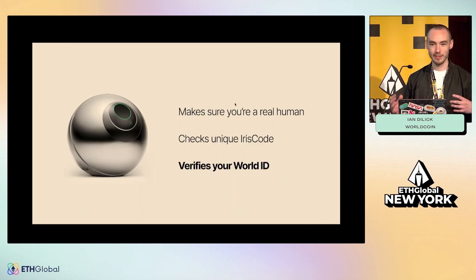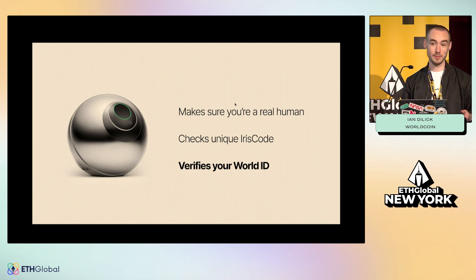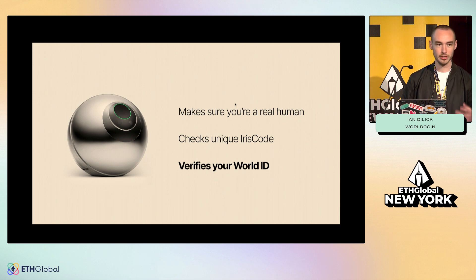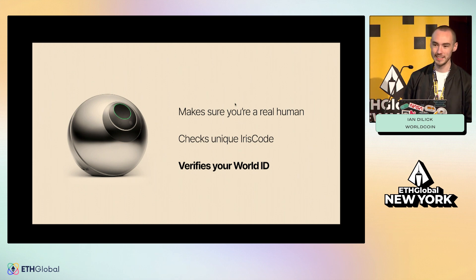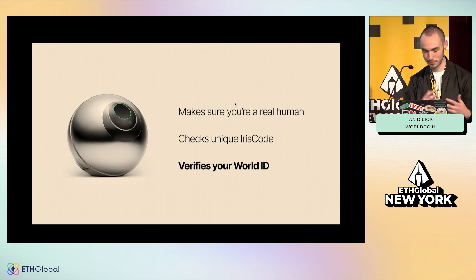The Orb first makes sure that you're actually a human, not a photo of a human, not a cat or a dog. It takes photos of your irises and calculates this iris code — a non-reversible digital representation of the pattern of your iris. If you don't opt into data custody, we never store those images that the Orb takes; they get deleted from memory on the Orb and don't even touch its storage. We then use that iris code, check to make sure it's unique from all the other iris codes of everyone else who's signed up before. With that, we verify your World ID. The public key of your self-custodial identity in World App gets added to a Merkle tree on chain.